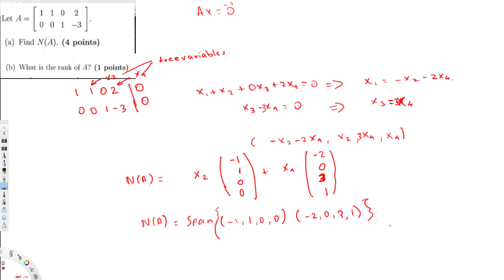That's the final answer for the null space. Now for part B, the rank is very simple — it's the number of pivots, or the number of linearly independent vectors. In this case we have two pivots, so the rank is equal to 2. That's all it is — I hope you guys like this video, see you next time.